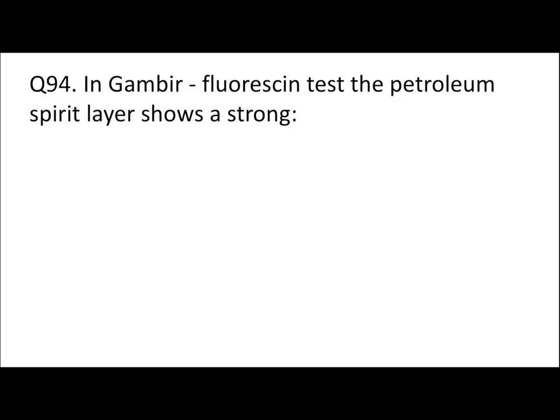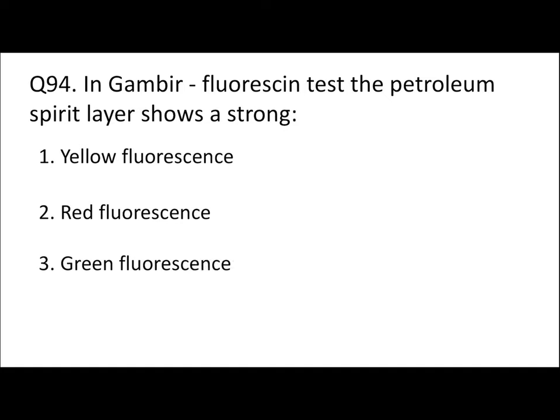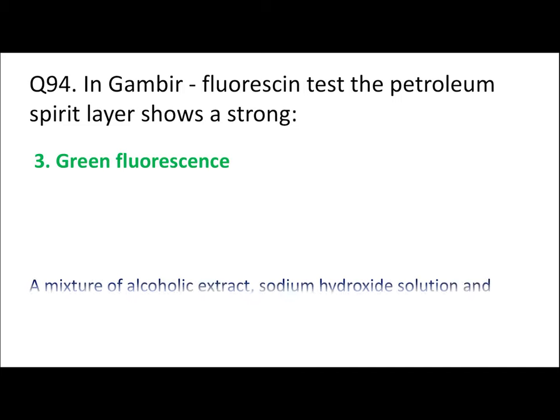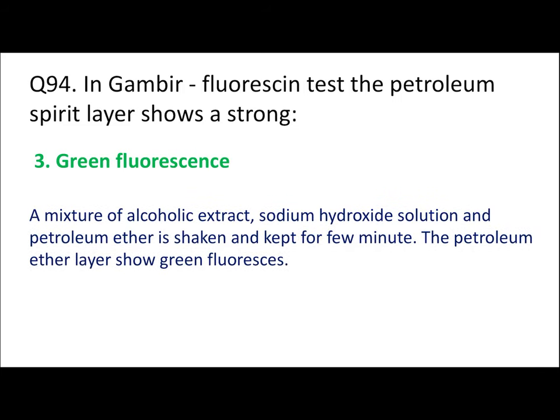Question 94: In the Gambir fluorescence test, the petroleum ether layer shows a strong colour. Which colour — yellow fluorescence, red fluorescence, green fluorescence, or blue fluorescence? In the Gambir fluorescence test, petroleum ether shows green fluorescence. The test is performed by making a mixture of alcoholic extract and sodium hydroxide solution with petroleum ether, keeping it for a few minutes, after which the petroleum ether layer shows green fluorescence.